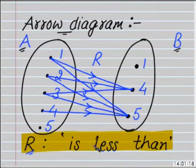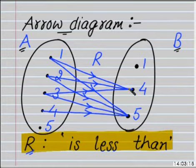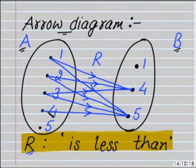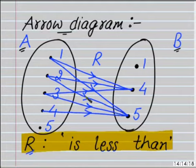Therefore, all the ordered pairs (1,4), (1,5), (2,4), (2,5), (3,4), (3,5), and (4,5) are represented by the arrow diagram.